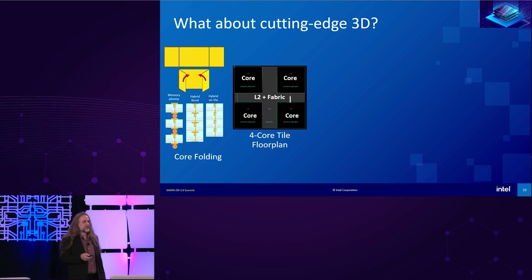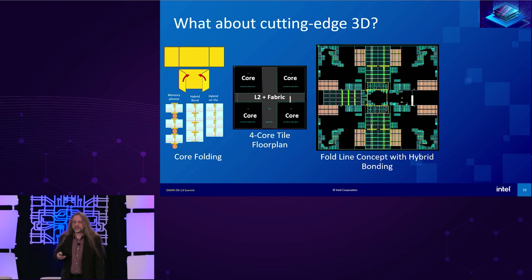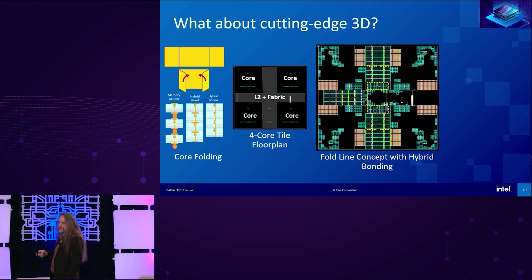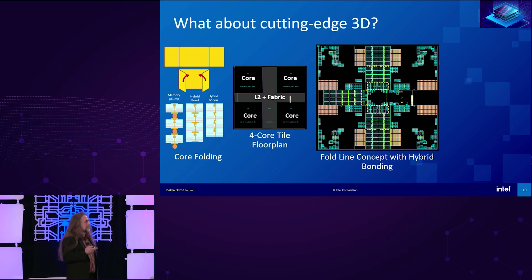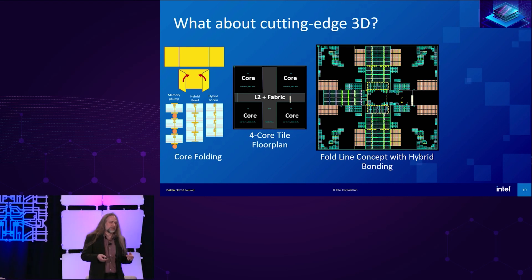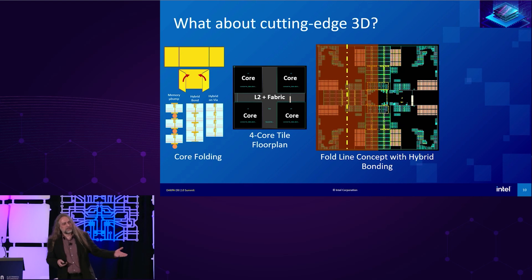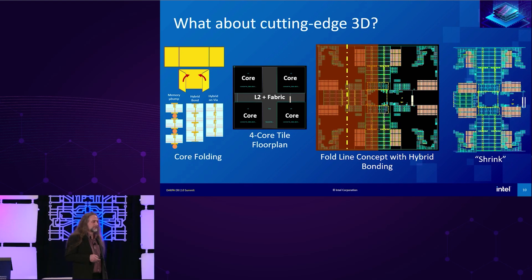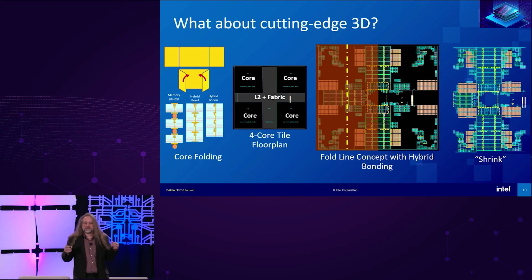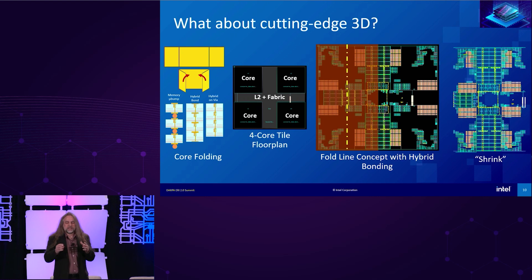Rolling this forward: imagine a four-core tiled floor plan, with cores in the corners and L2 cache plus mesh stop in the middle. This becomes the floor plan for a monolithic or polyolithic approach. The idea of core folding is to superimpose a fold line — bring a second piece of silicon, literally fold it over as two layers. If you remove the silicon to see it top-down, you get a lovely shrink in the x-axis: shorter distances, higher bandwidth, lower energy. Everything looks like a win, and you can keep folding.